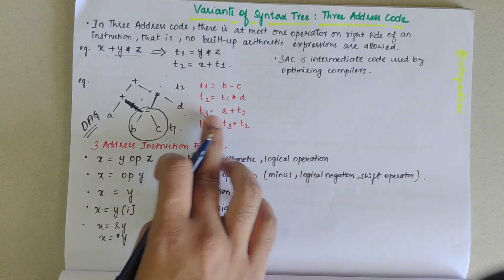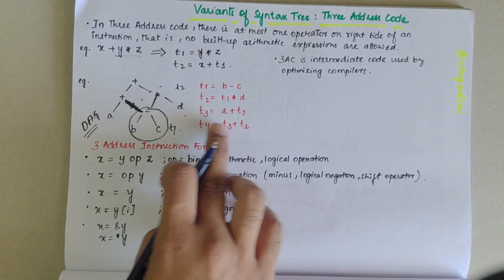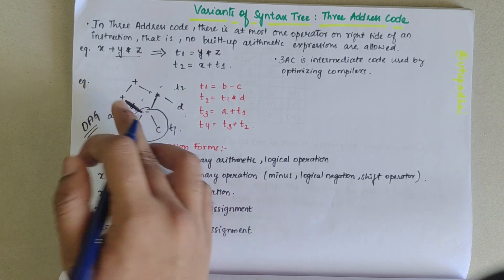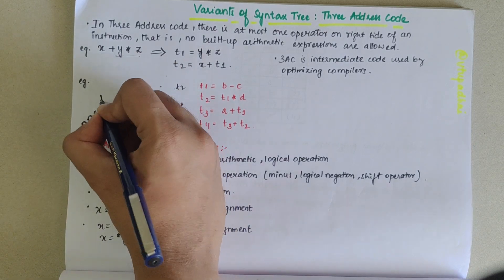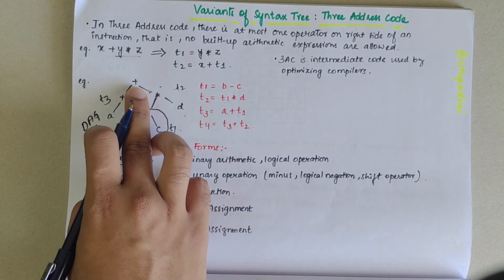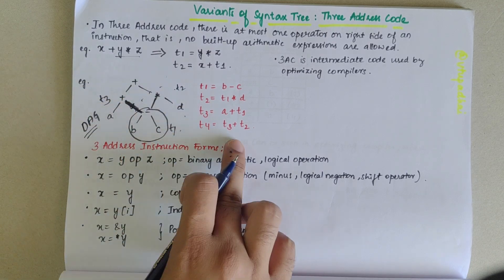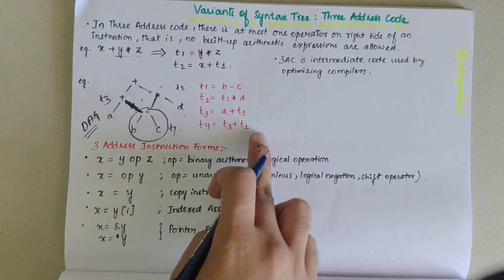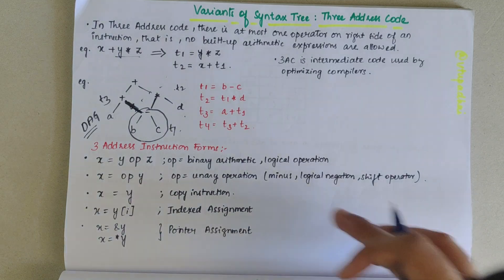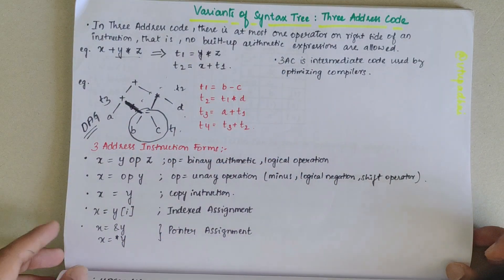Next, t3 is equal to a plus t1. Then t4 is equal to t3 plus t2. That is how a three address instruction would be defined for the given DAG.